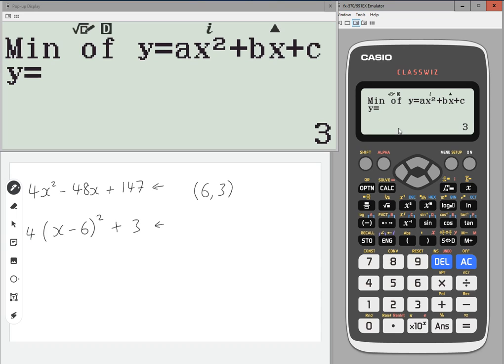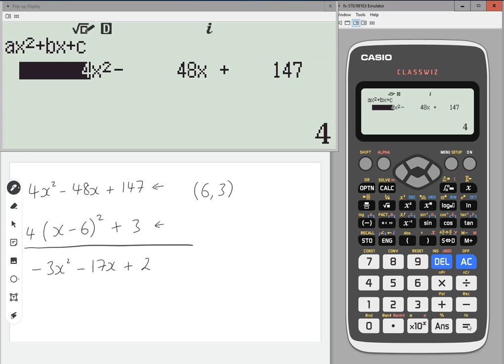And that gives the quadratic in completed square form. So another example would be something like -3x² - 17x + 2, for example. So what I'm going to do is I'm going to press equals and change the values. So minus three, minus 17.